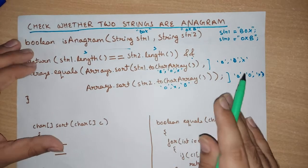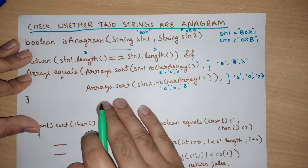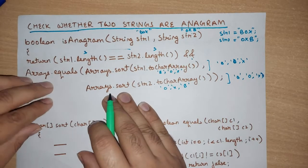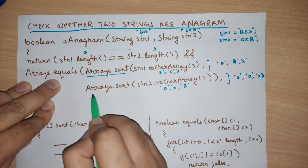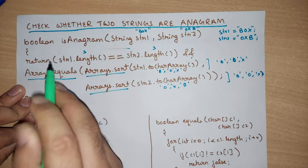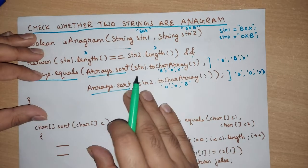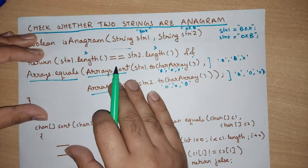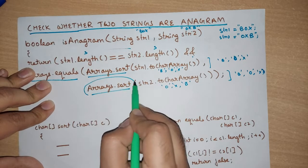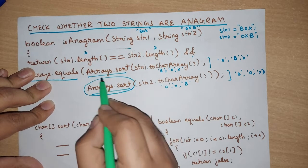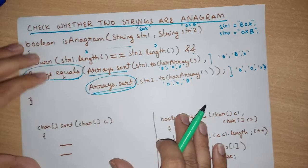Sometimes in interviews, the interviewer may say you cannot use existing APIs like Arrays.sort() or Arrays.equals(). In that case, you need to write your own logic. You would write your own sorting logic to replace Arrays.sort() and your own comparison logic to replace Arrays.equals().